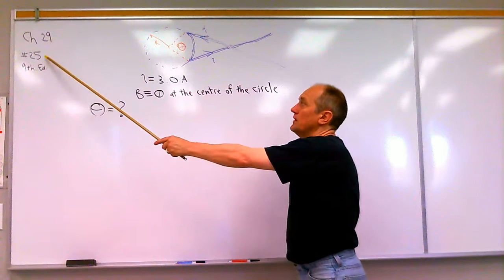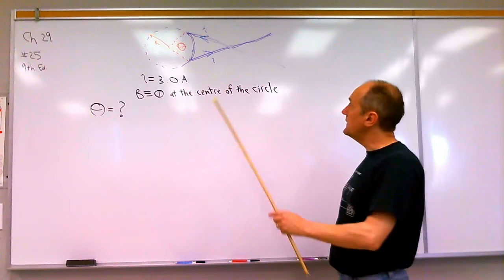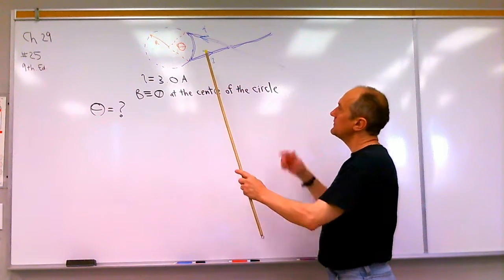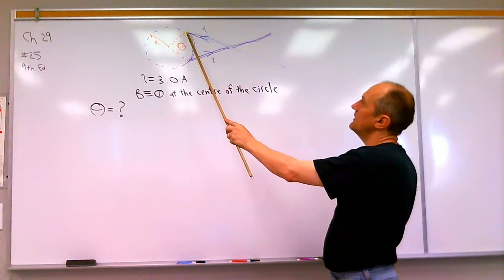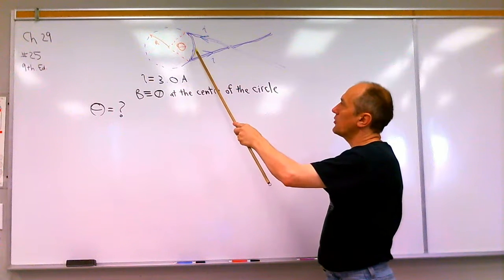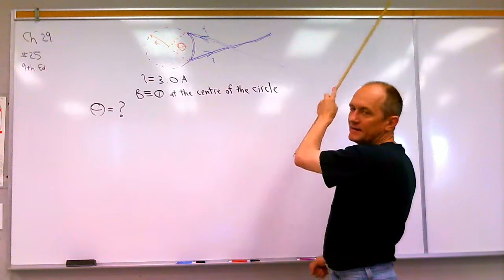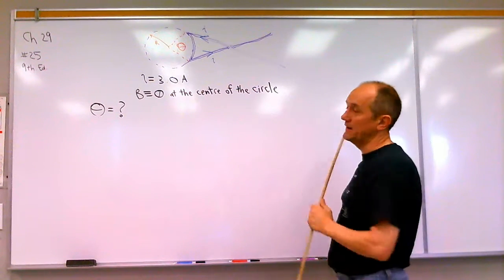This is the solution to problem 25 from chapter 29 in the 9th edition. In this problem we're told we have a wire that comes in from a very long distance, touches a circle tangential to it, then it bends and curves along the circumference of that circle and then goes away again, off, far away.